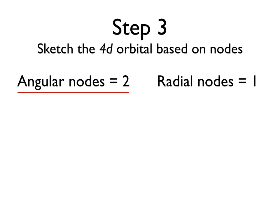Let's start with angular nodes. Recall that an angular node is a plane in which no electron density can exist. Here we've got two planes, so we'll put one right there, and another perpendicular to it.